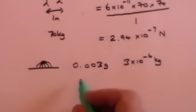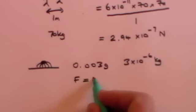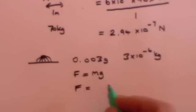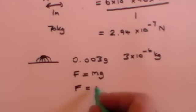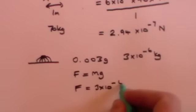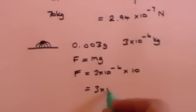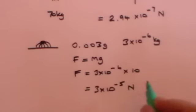We learned this from when we did classical mechanics. The force acting on the ground — the weight of that ant — is its mass times g. For these purposes we will regard g as 10; it's normally 9.81 but let's keep it simple. So the force, or the weight, of the ant is equal to 3 times 10 to the minus 6, which is its mass, times 10, which is g, which equals 3 times 10 to the minus 5 newtons.